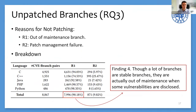In the next part, we uncover why some branches are not patched and what security risks are posed to users. We investigate all unpatched CVE-branch pairs and identify two primary reasons. The first reason is out-of-maintenance branches: though the stable branch is vulnerable, it is out of maintenance when the vulnerability is disclosed, so it is not patched. The second reason is patch management failure: the branch is still maintained at disclosure time, but the patch is not applied due to poor patch management. About 90% of unpatched CVE-branch pairs are caused by out-of-maintenance branches.